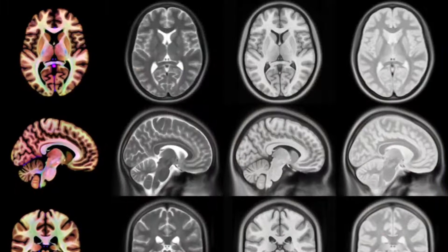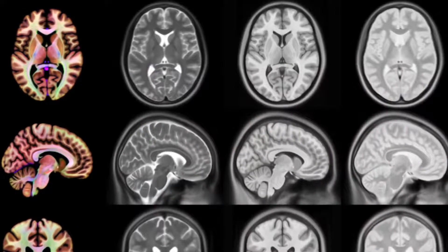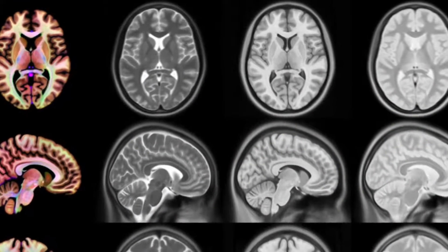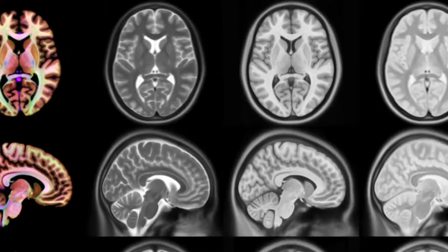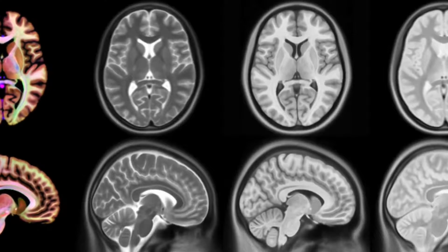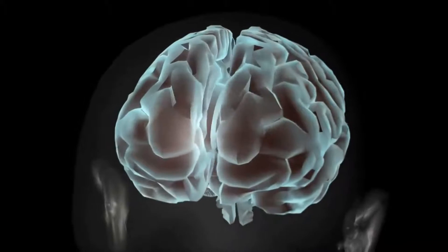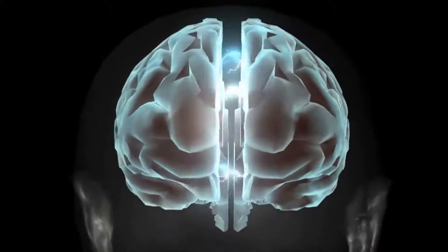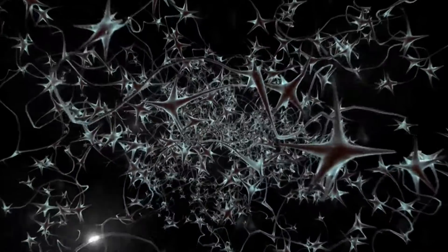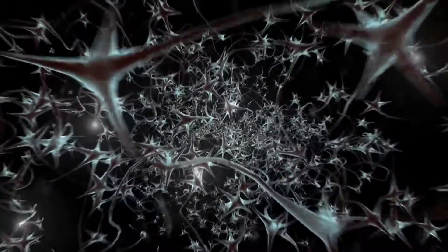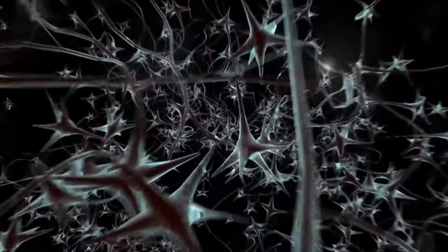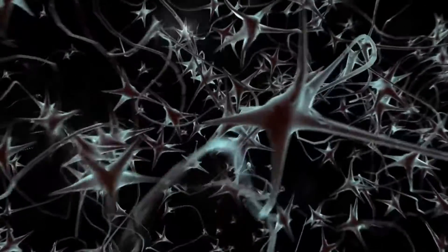Proper brain function isn't just about anatomical parts looking like there's no damage with a CAT scan or an MRI. Proper brain function is also dependent on correct functioning of this intricate network of electrical and chemical neuro-connectivity both within the various parts of the brain and between the various parts of the brain.